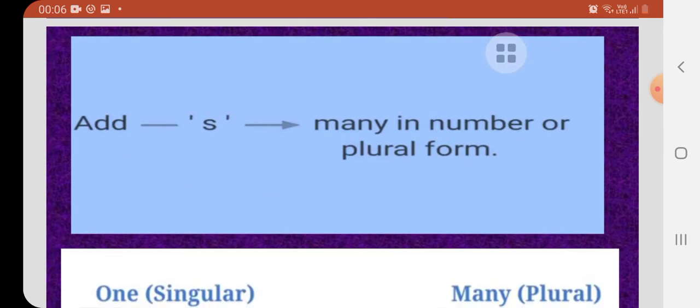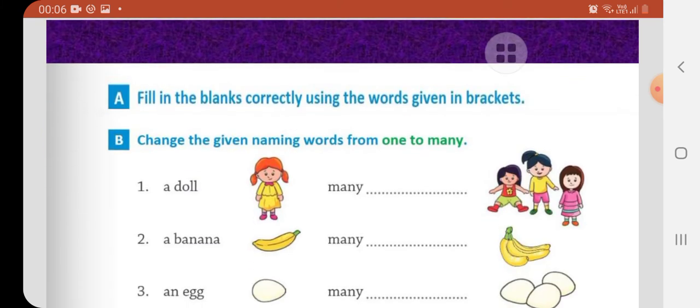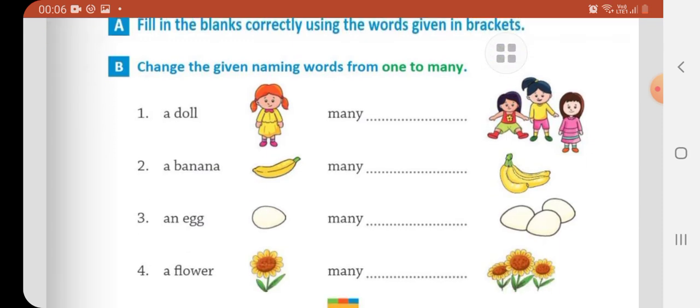So children, rule one of how to make singular to plural noun. So first rule is, we have to add s. We have to add s, many in number or plural form. When we make singular to plural, we have to add s in singular noun to make plural form. Example, apple, apples. Pencil, pencils. So children, these are the exercises we have done in the class.